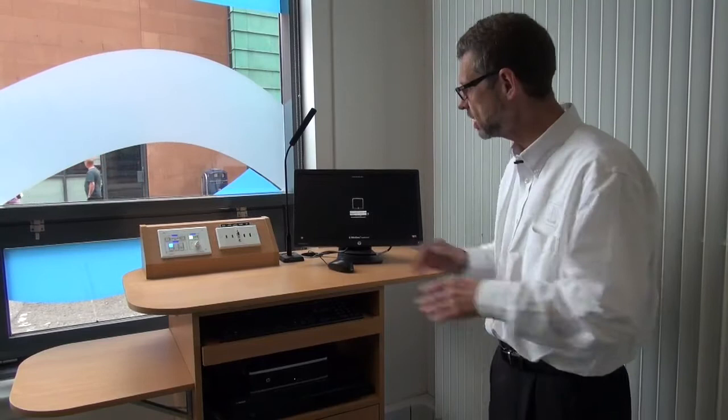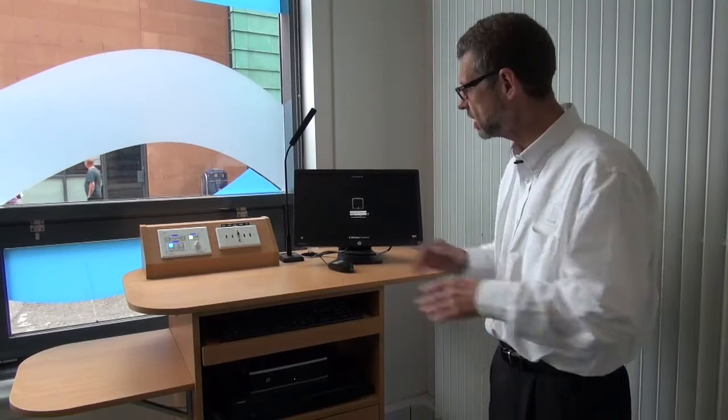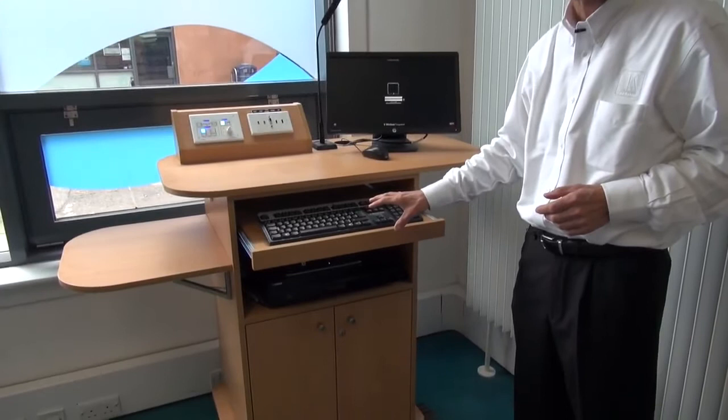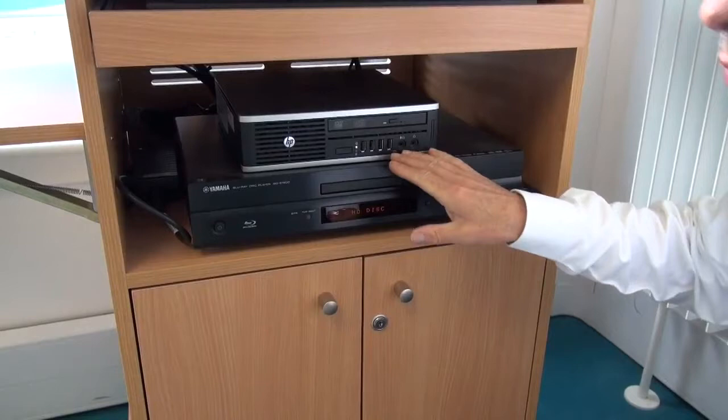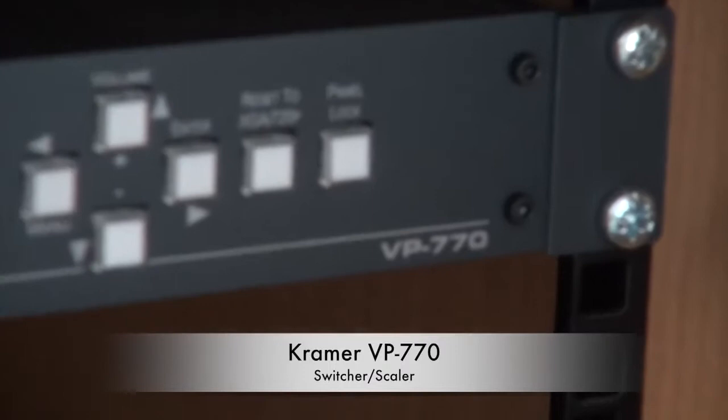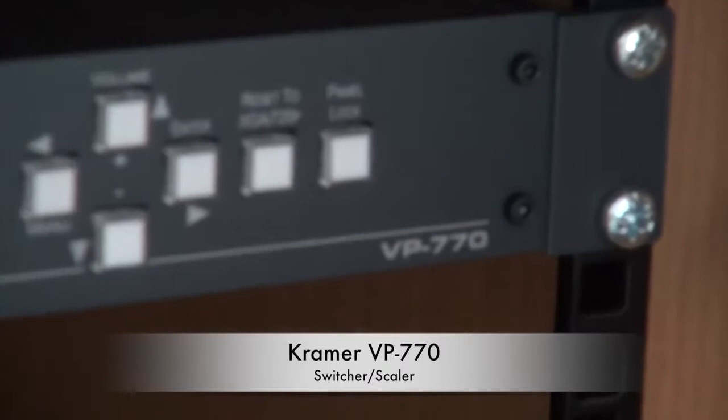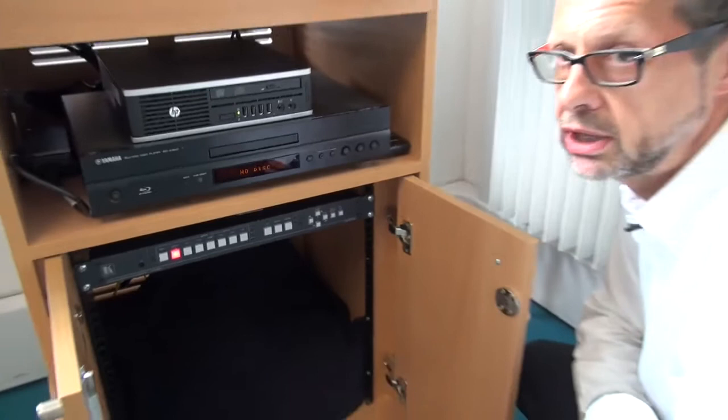That's the top of the lectern, then there's a keyboard for use with the main PC in this room, and working down we've got the main PC, the blu-ray player, and opening these doors reveals the main switcher in this room. This is a Kramer VP770, one of our new range switches. This controls all the video switching in this room along with the audio.